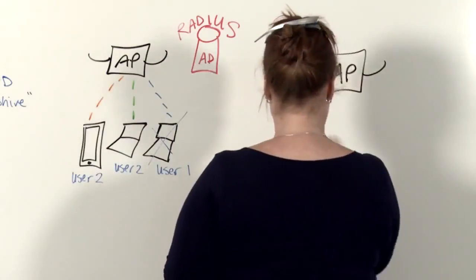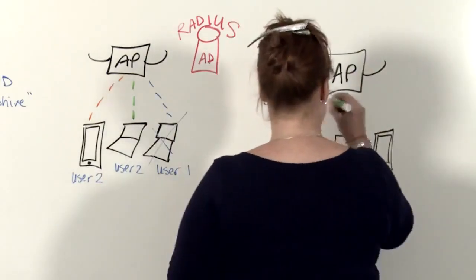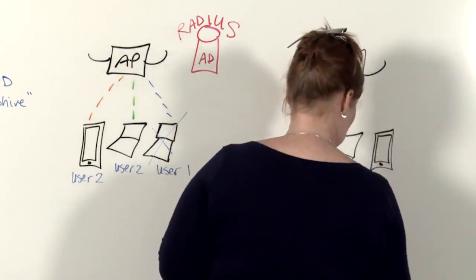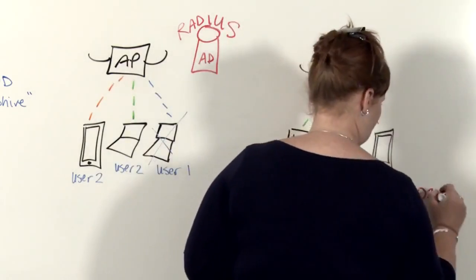This is where Arrowhive Private Pre-Shared Key comes in. What we've done is take the benefit that you get from using 802.1X, but made it as easy to use as a pre-shared key network.